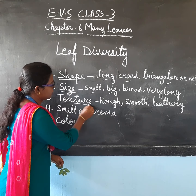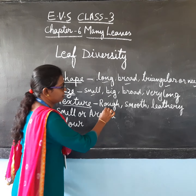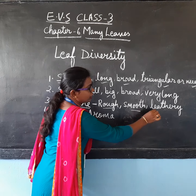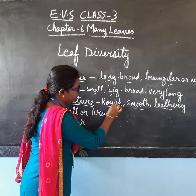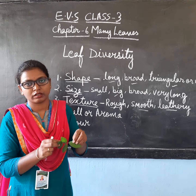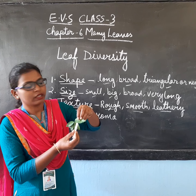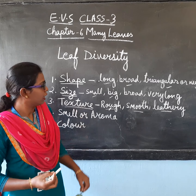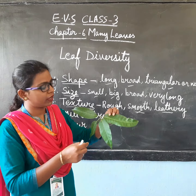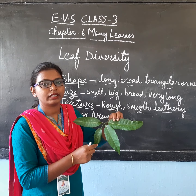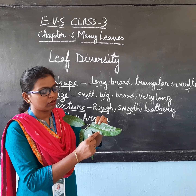Third is texture. Some of the leaves, when we touch them, we can feel that they are rough, smooth, or leathery. The example of rough is the rose plant leaf — when you touch a rose leaf, you can feel it is very rough. Next, the smooth leaf is the mango leaf — when you touch a mango leaf, it is very smooth to touch; you can feel the smoothness of the mango leaf.